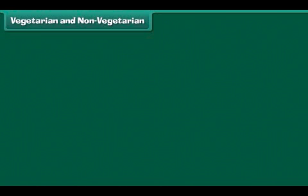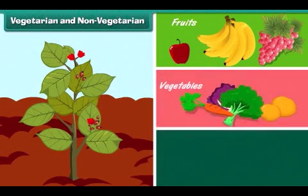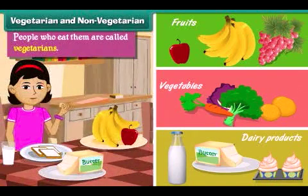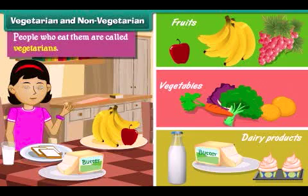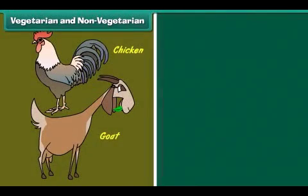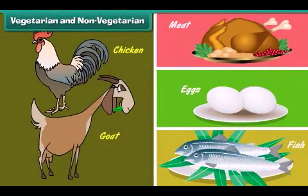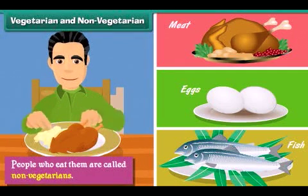Vegetarian and non-vegetarian. Plant products like fruits, vegetables and dairy products are vegetarian food. People who eat them are called vegetarians. Animal products like meat, eggs and fish are non-vegetarian food. People who eat them are called non-vegetarians.